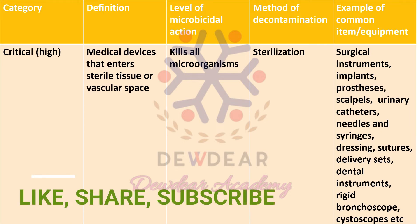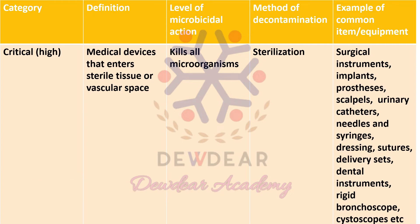Examples of critical items include surgical instruments, implants, prosthesis, scalpels, urinary catheters, needles, syringes, dressings, sutures, delivery sets, dental instruments, rigid bronchoscope, and cystoscope. Whatever instruments are entering into the sterile tissue or into the vascular space are considered critical items and they need sterilization as a method of decontamination.